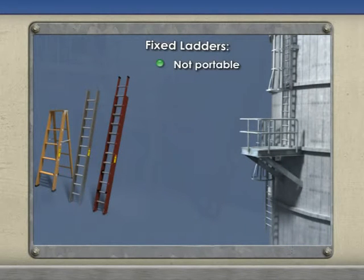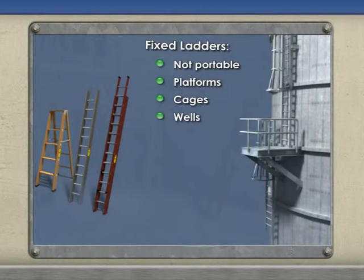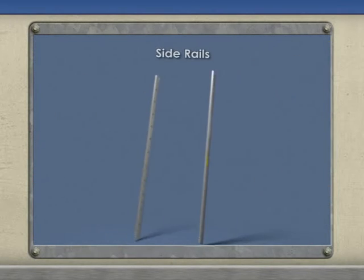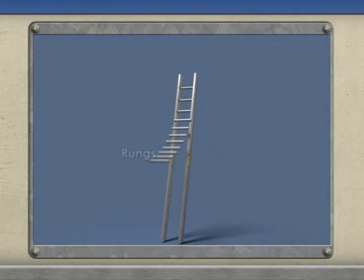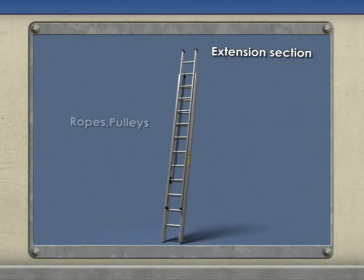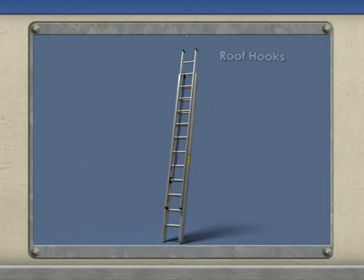Extension ladders are used like straight ladders but allow for greater heights to be reached. Fixed ladders are ladders that are permanently fixed to a building structure or piece of equipment. These ladders may have additional structures attached such as rest platforms, cages, or wells. Ladders can be constructed from a variety of materials including wood, metals, and reinforced plastics. They usually consist of two side rails joined at regular intervals by cross pieces called steps or rungs. Extension ladders usually have pulleys, ropes, and ladder locks, and some ladders may be equipped with roof hooks or adjustable feet for added stabilization.